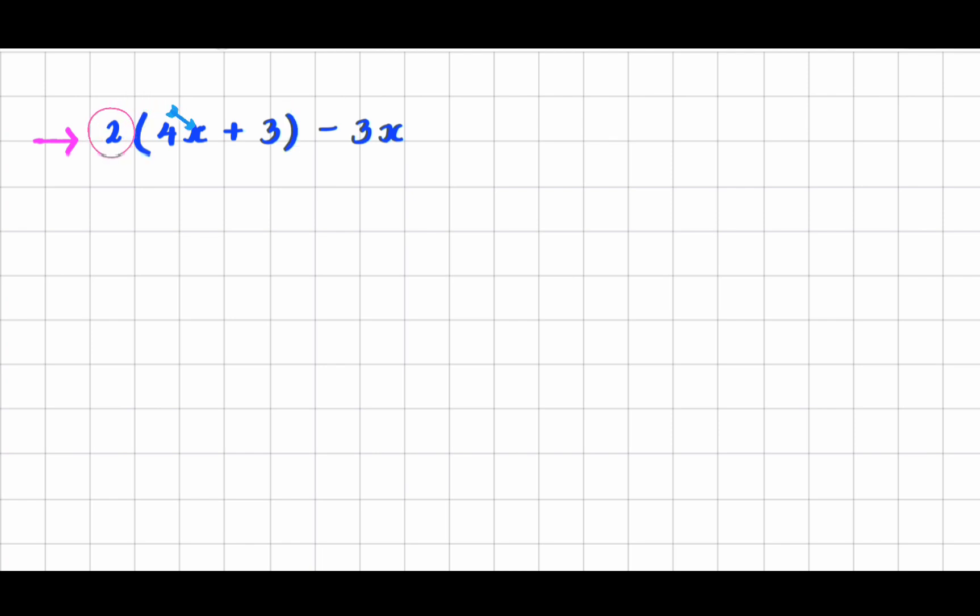So I am going to distribute this 2 to the 4x my first term inside of my brackets and to the 3 the second term inside my brackets. So 2 times 4x is 8x, 2 times positive 3 is positive 6 and now I am just bringing down anything that I didn't use which is my minus 3x.